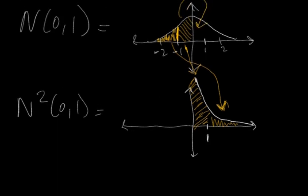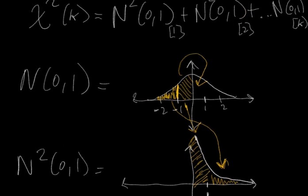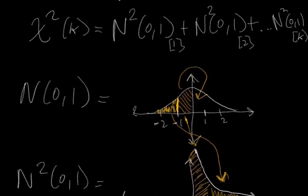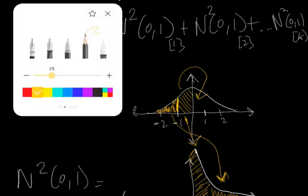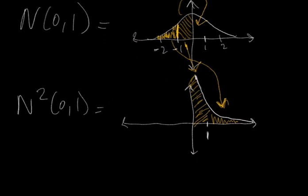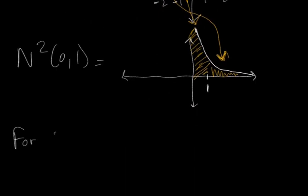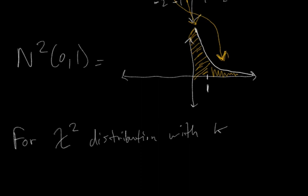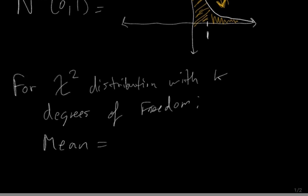One key thing to understand is the mean and variance of a chi-squared distribution in terms of k, the number of standard normals being summed. For a chi-squared distribution with k degrees of freedom, the mean is equal to k, and the standard deviation is equal to the square root of 2k.